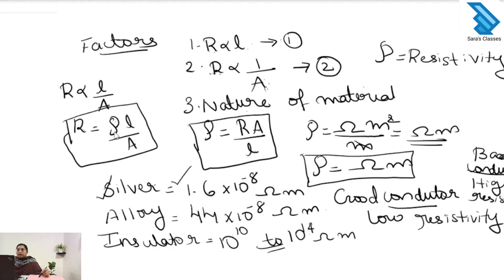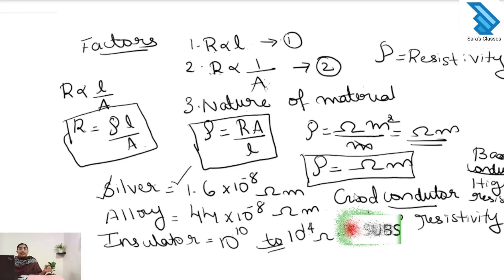To summarize: R is equal to rho L by A — this is the relation. Resistivity rho equals R times A divided by L, and the unit of resistivity is ohm meter. Based on resistivity we can identify good conductors (low resistivity) and bad conductors (high resistivity).